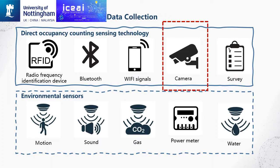Data collection for building occupancy information usually requires sensors, which can be divided into direct counting sensors and environmental sensors. Direct sensors can record occupancy information directly, such as infrared sensors and cameras. Environmental sensors use indirect methods to record occupancy behavior, such as motion and sound sensors or power meters. For this research, I will use a camera to collect occupancy information, since it can capture not only occupancy state but also detailed information like the position and movements of occupants, which can be used in more detailed studies.